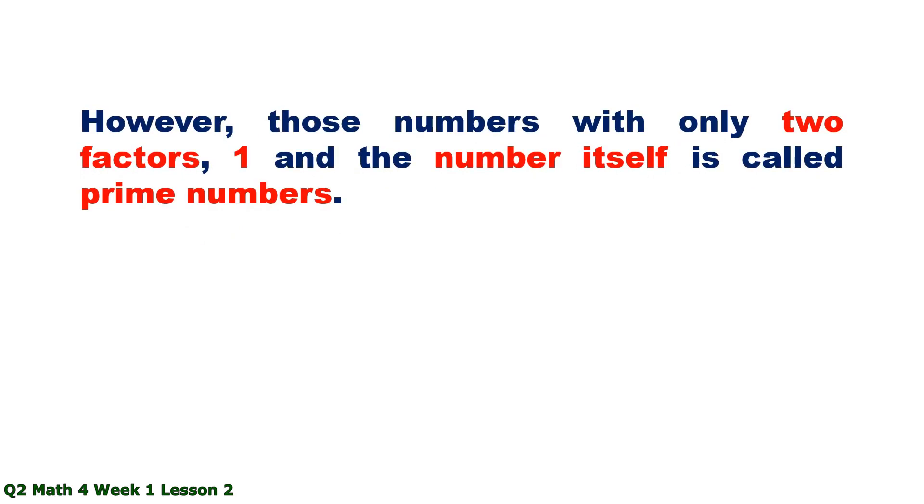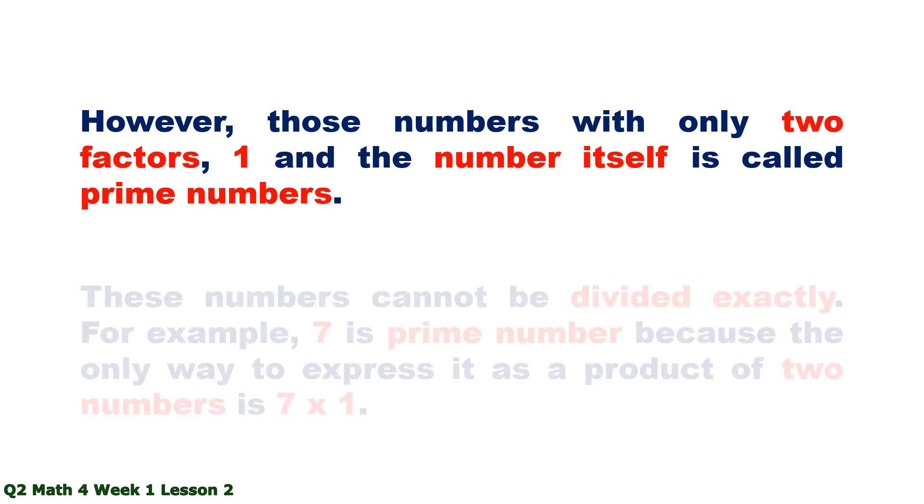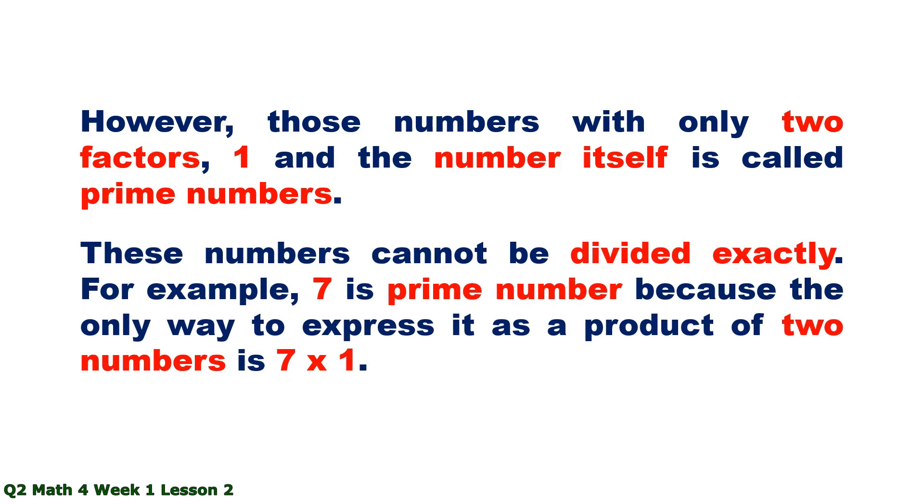However, those numbers with only two factors, 1 and the number itself, are called prime numbers. These numbers cannot be divided exactly. For example, 7 is a prime number because the only way to express it as a product of two numbers is 7 times 1.